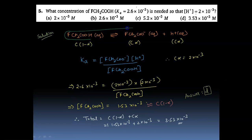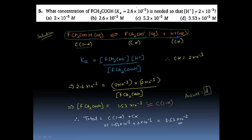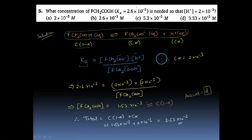If alpha is the degree of dissociation, these are the concentrations at equilibrium: C×(1−alpha) for the undissociated acid, C×alpha for the fluoroacetate ion, and C×alpha for H⁺. We know the dissociation constant for an acid can be written as the product of active concentrations of ions over reactants. What is given to us is the H⁺ concentration, which equals C×alpha = 2×10⁻³ — that is equation number one.